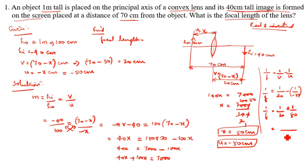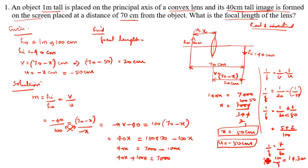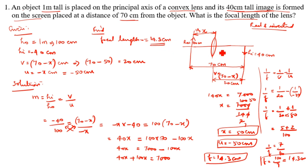Taking 100 as the common denominator: 1/F equals 5/100 plus 2/100 equals 7/100. Therefore F equals 100/7, which equals 14.3 centimeters. The focal length is 14.3 centimeters, which is positive, confirming it is a convex lens. Thanks for watching this video.